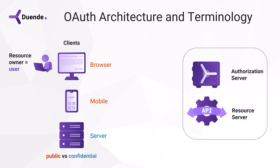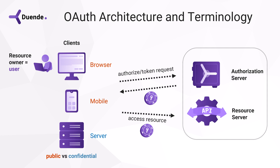Now that we know the terminology, how do all these actors interact? In order to access a resource, a client has to get a token from the authorization server. It does that with an authorization request. When validation of that request succeeds, the token is returned, and from this point onwards the client can access the protected API by attaching the token to each request. The tokens we're talking about have the same benefits as the SAML assertions I showed — they are short-lived, convey information about the user, and are able to access a limited amount of resources using scopes.